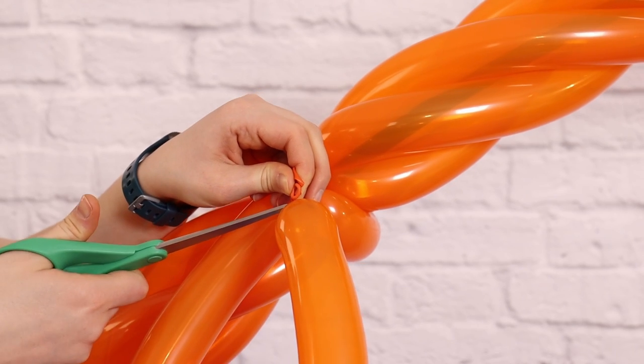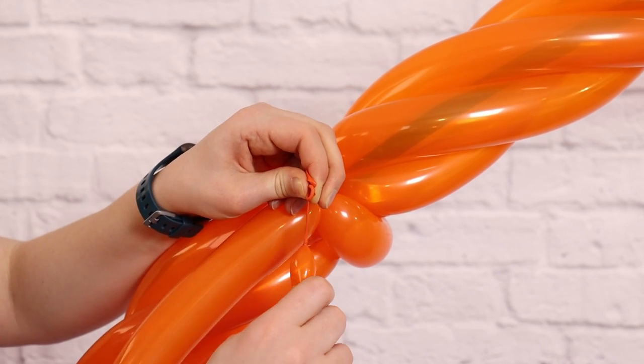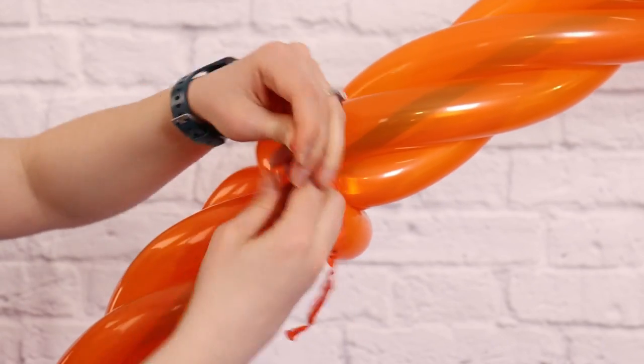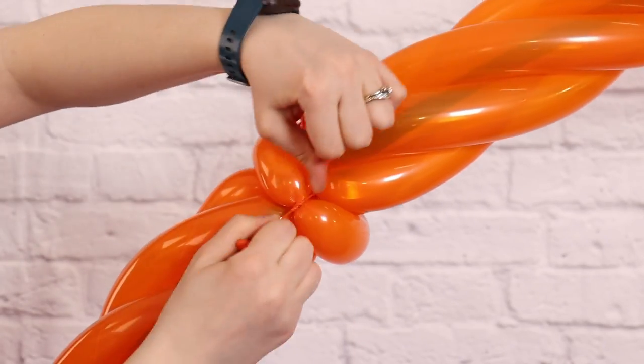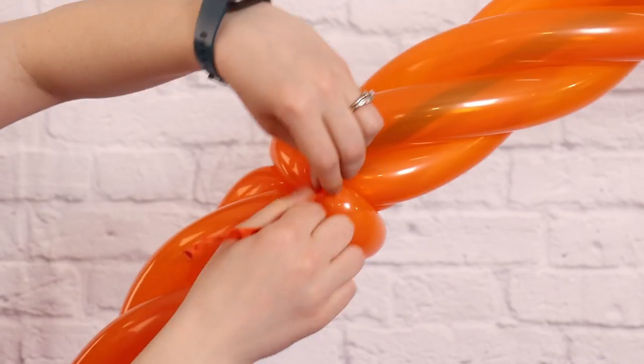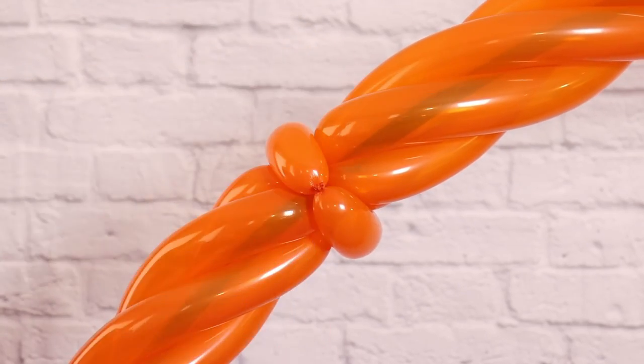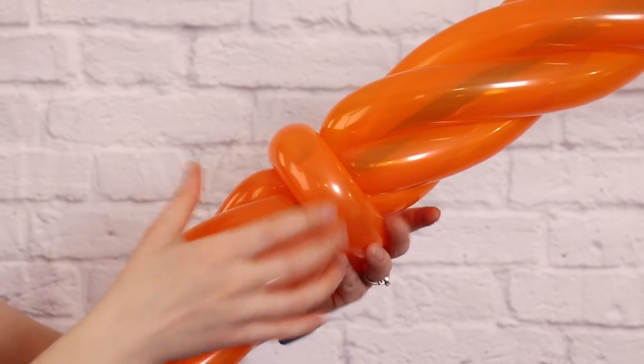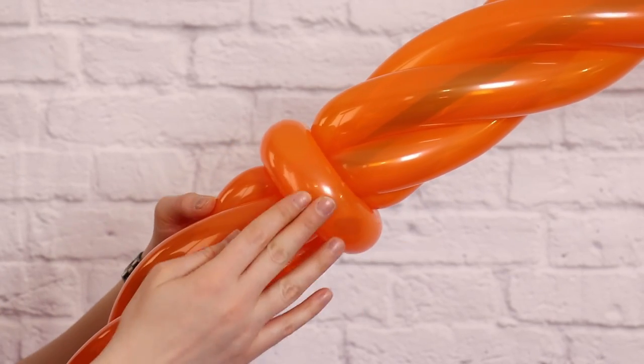So once I've got that twisted together I'm just going to nip the ends so that they slowly deflate, tie it off, and then trim away any excess. And what you're seeing here would actually be the back side of this display. So once I've got this all tied up I'll rotate this seam to the back so that when you're looking at the front of our basketball hoop you won't see this knot in the balloon.